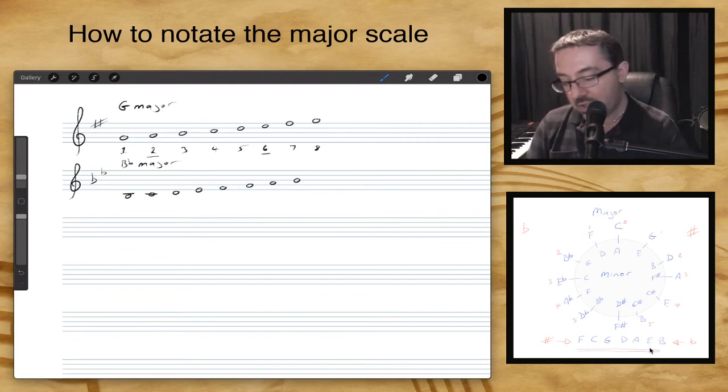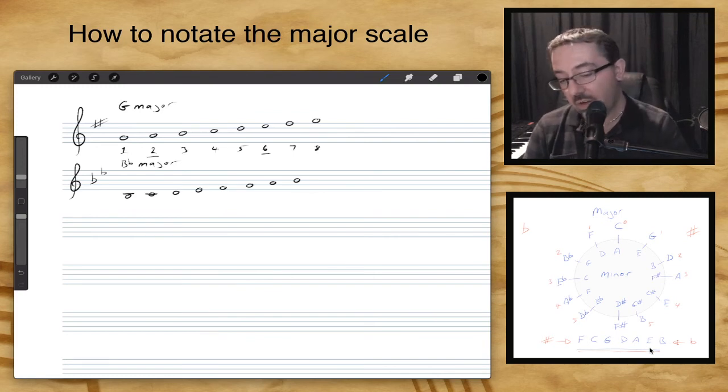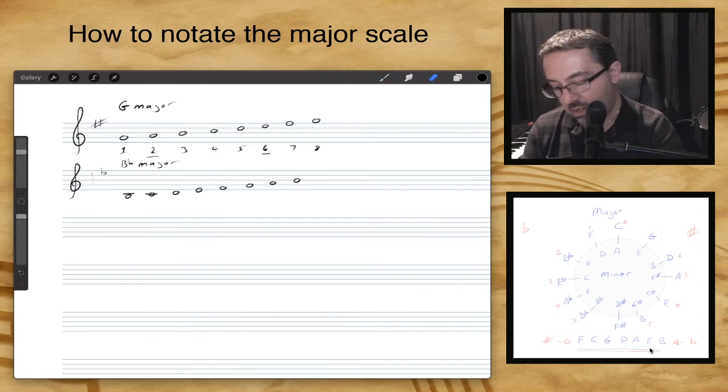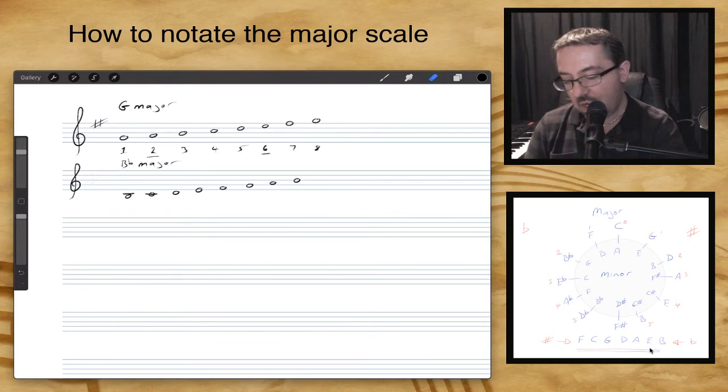Now if you are asked to write the B flat major scale without a key signature, let's cover that one. So if I get my eraser, and let's get rid of our key signature that we had over there. So now I've got the letters B, C, D, E, F, G, A, and B. So nothing to do correctly with the B flat major scale.